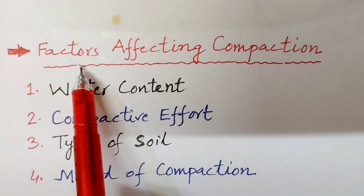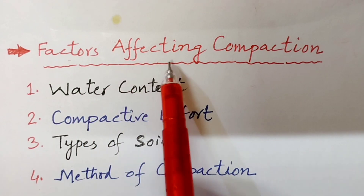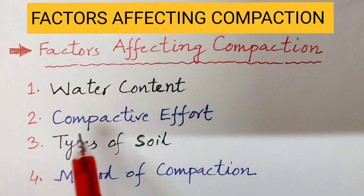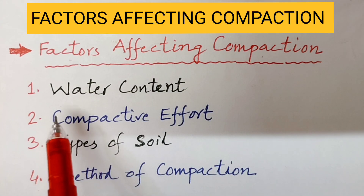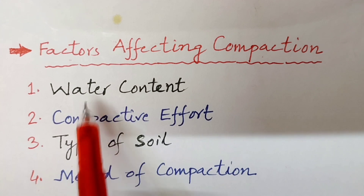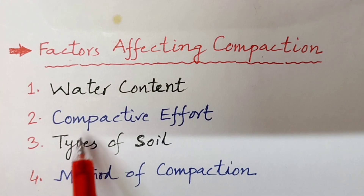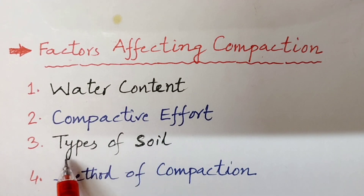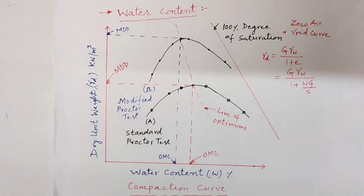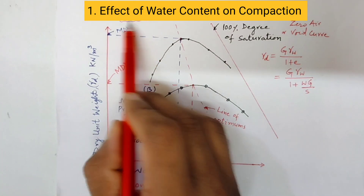In this lecture, we will learn about factors affecting compaction. There are basically four factors — water content, compactive effort, types of soil, and method of compaction — which affect the compaction of soil. Let us discuss one by one, starting with water content.